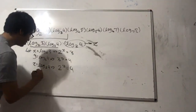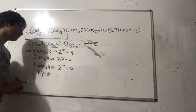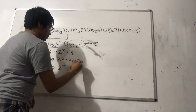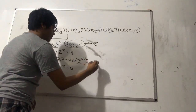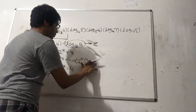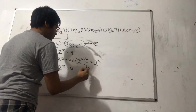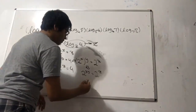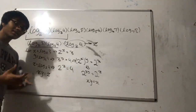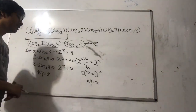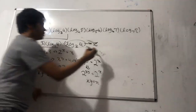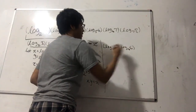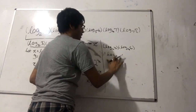Now we want to show that xy equals z. Since 2 to the x equals 3, we replace 3 with 2 to the x, giving us 2 to the (x times y) equals 4. And since 4 equals 2 to the z, we replace 4 with 2 to the z. So 2 to the xy equals 2 to the z, and because the bases are the same, the exponents are equal — so xy equals z. This proves the chain rule of logarithms: log base a of b times log base b of c equals log base a of c.